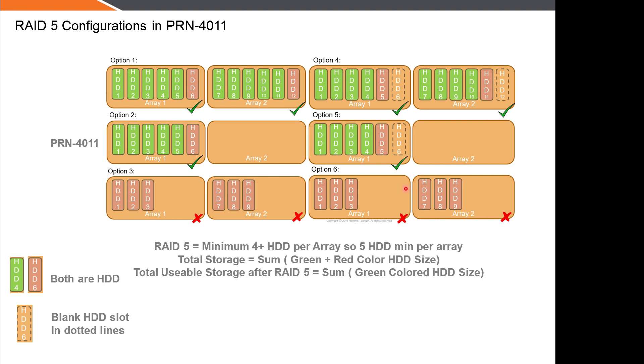The total storage is the sum of all the hard disks. However, after RAID, the usable storage will be the sum of the green hard disks only.